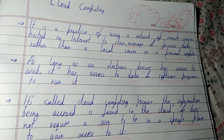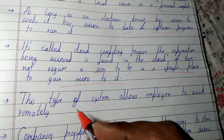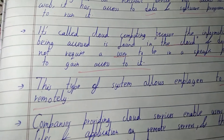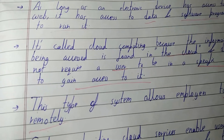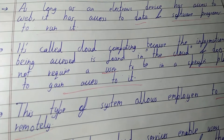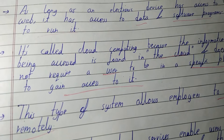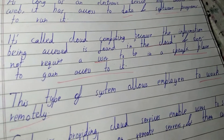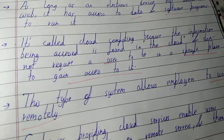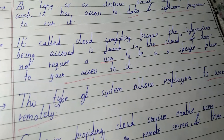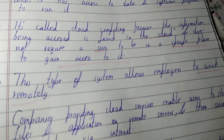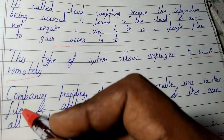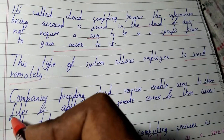This type of system allows employees to work remotely. Employees of a company or organization can work from any place — rather than working from the office, they can work from home or somewhere they feel comfortable. This is helpful for both the employee and the company, because if the employee feels at ease, they will perform much better.